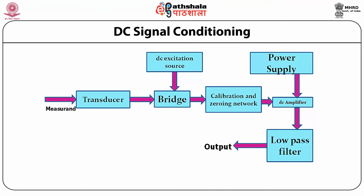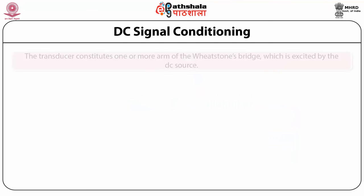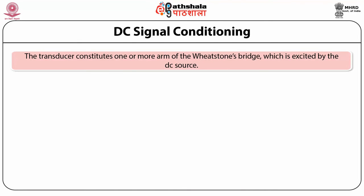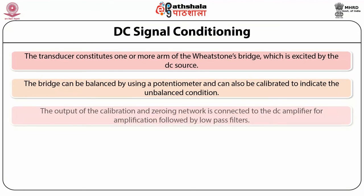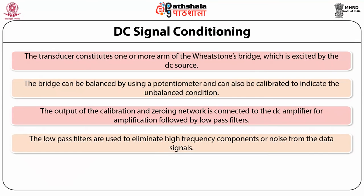DC signal conditioning: this block diagram shows the DC signal conditioning arrangement. Here, the transducer constitutes one or more arms of the Wheatstone's bridge, which is excited by a DC source. The bridge can be balanced by using a potentiometer and can also be calibrated to indicate the unbalanced condition. The output of the calibration and zeroing network is connected to a DC amplifier for amplification, followed by low-pass filters, which are used to eliminate high-frequency components or noise from the data signals.